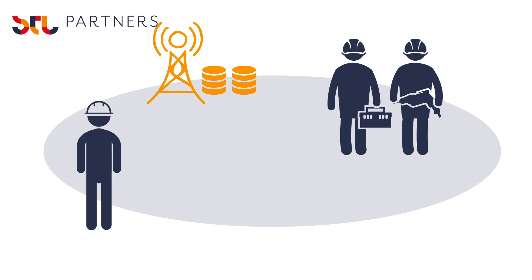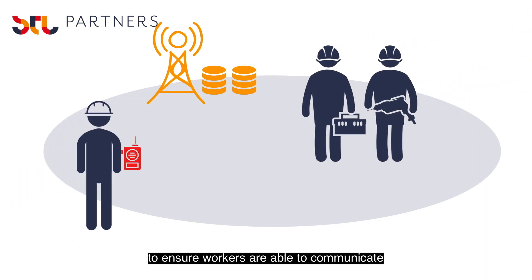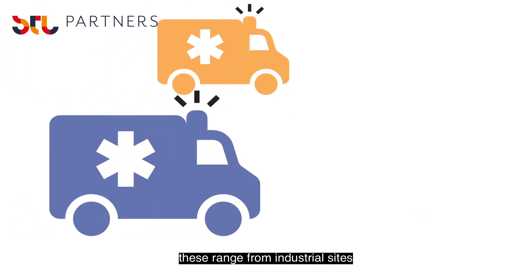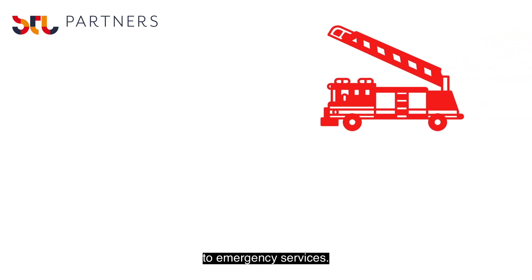For example, private 5G is used in push-to-talk communications to ensure that workers are able to communicate in mission-critical situations. These range from industrial sites to emergency services.